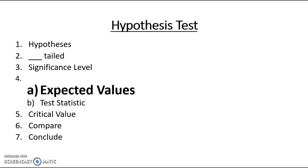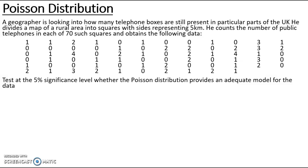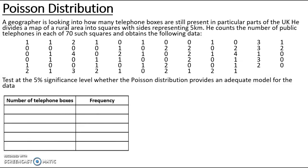To work out our test statistic we need our expected values. For this question, we've just been given raw data and to make life easier for ourselves we need to put it in a frequency table. For our x values, those are our number of telephone boxes per square, and our frequency is how many we've found. Looking at the data we've found between zero and four telephone boxes per 25 kilometer square. We've got 27 zeros, 23 ones, 14 twos, four threes and two number fours.